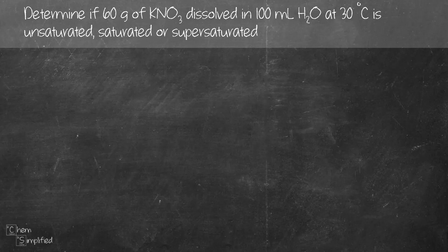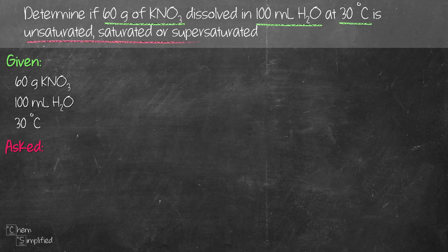Before we start solving the question, let's first figure out what we're given. 60 grams of KNO3, 100 ml of water at 30 degrees Celsius. And we're asked to find if the solution is unsaturated, saturated, or supersaturated, basically the concentration.